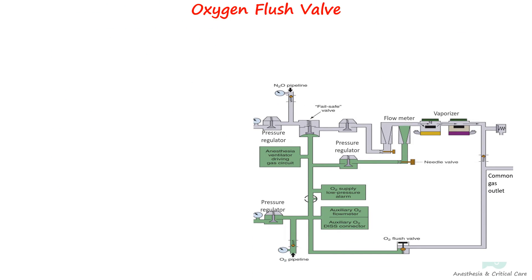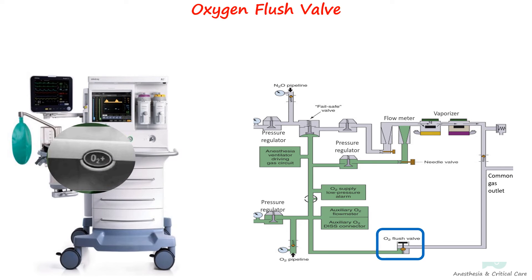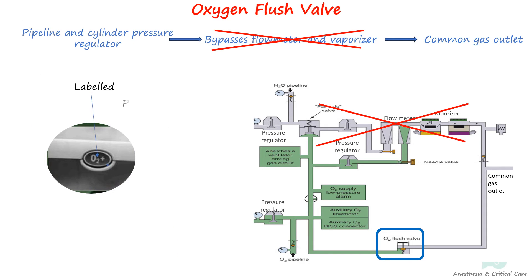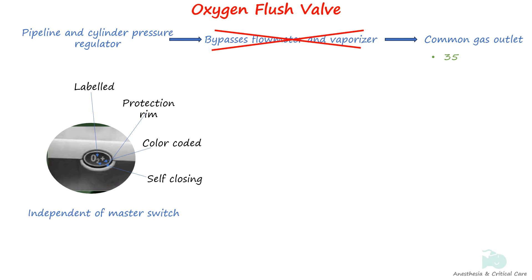The oxygen flush, also known as the emergency oxygen bypass, receives oxygen from the pipeline inlet or cylinder pressure regulator and directs a high, unmetered flow directly to the common gas outlet. It is commonly labeled O2 and mounted on the front of the machine for easy accessibility. The self-closing, color-coded flush button is commonly recessed or placed in a collar to prevent accidental activation. The oxygen flush can be activated regardless of whether the master switch is on or off, providing flows of 35 to 75 liters per minute at approximately 60 psig directly to the common gas outlet, bypassing the flow meters.